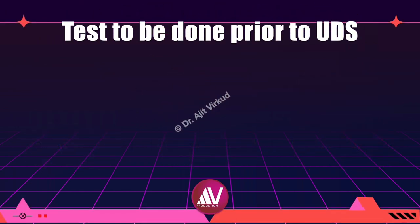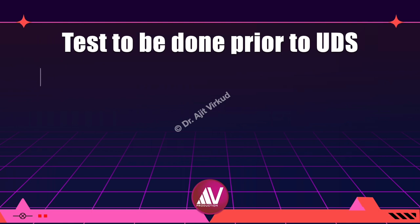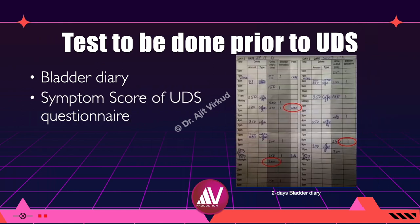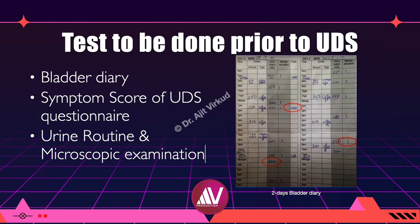The following tests must be done prior to performing urodynamic studies: bladder diary — the biggest voided volume must be noted — symptom score, urine routine and microscopic examination to rule out urinary tract infection and rarely malignancy. This is important medico-legally. It must be done at least 10 days prior because if infection is found, antibiotics have to be given for seven days or more to treat it. Dipstick urine analysis. The patient must carry these test reports to the urodynamic study lab. There is no need to fast; you can have your breakfast and come to the UDS lab. Take your usual morning medication.